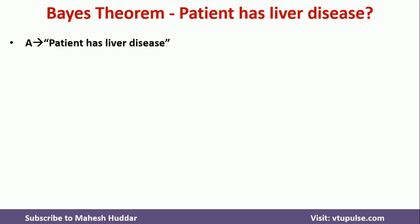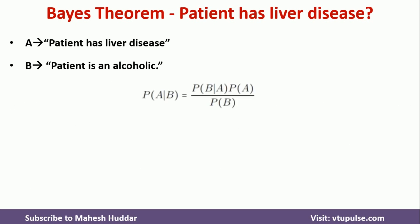Event A represents the patient has liver disease, and B represents the patient is an alcoholic. What we want to find is P(A|B) — the probability that the patient has liver disease given he is alcoholic. From Bayes' theorem, this is equivalent to P(B|A) × P(A) divided by P(B).